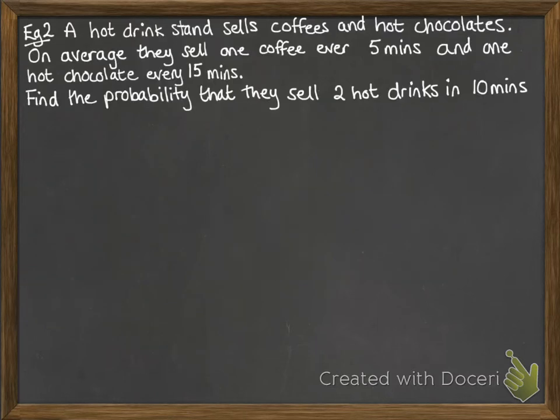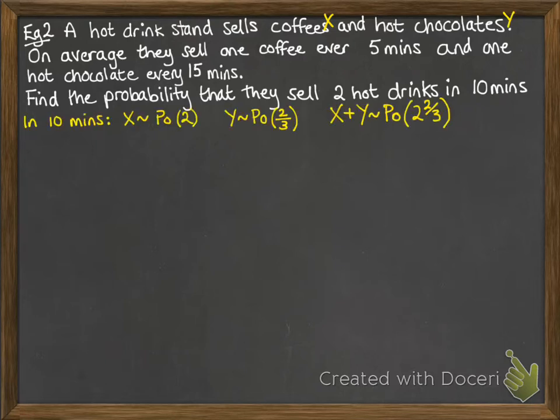Now taking the same question, this time we want to find the probability that they sell exactly two hot drinks in 10 minutes. We call them x and y again with the same details as before. We want the probability that x plus y equals 2. We put that into our formula as normal, using lambda equal to 2 and 2/3, which is 8 over 3.